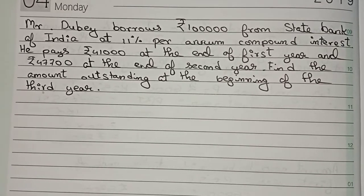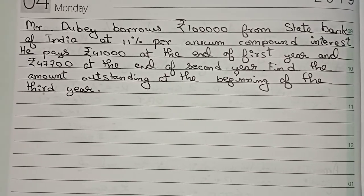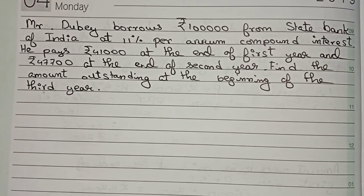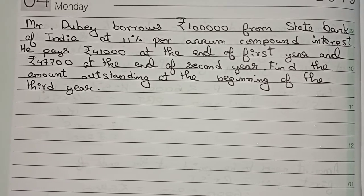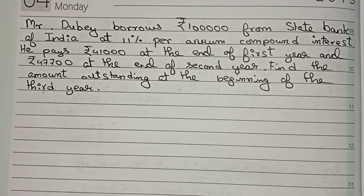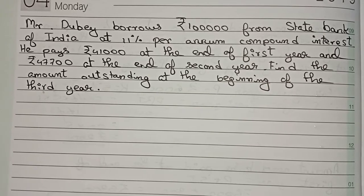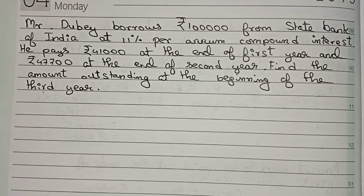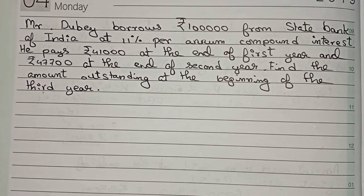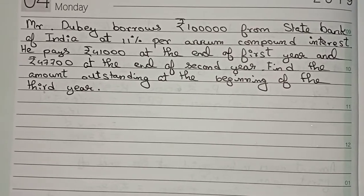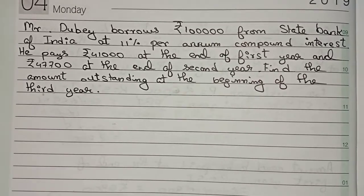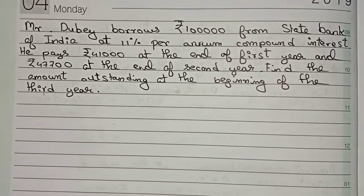Hello guys, welcome to this video. The question is: Mr. Dubai borrows rupees 1 lakh from State Bank of India at 11 percent per annum simple interest. He pays rupees 41,000 at the end of the first year and rupees 47,700 at the end of the second year. Find the amount outstanding at the beginning of the third year. This question will use the simple interest formula.